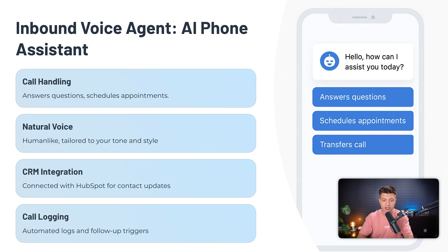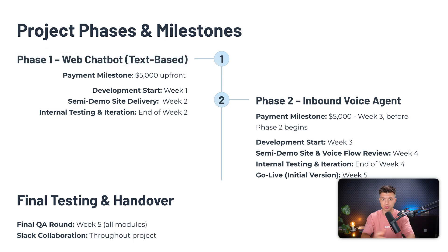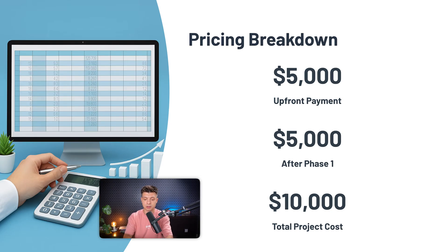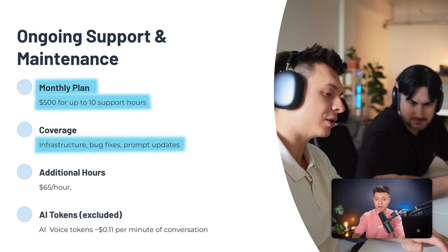The second phase was the voice agent. It was a natural-sounding assistant that can actually answer questions and schedule appointments, and we also set up an integration with their CRM — HubSpot in this case. The project was broken into two phases: the first phase was the web chatbot with the human takeover feature and the whole dashboard around it; the second phase was the AI voice assistant with CRM integration. We kept everything super transparent with milestones — $5,000 upfront, $5,000 after phase one, for a total project cost of $10,000. We also offer a monthly support plan covering bug fixes, prompt updates, and infrastructure maintenance — all included in a $500 monthly maintenance fee. Anything extra is just billed as an hourly rate.